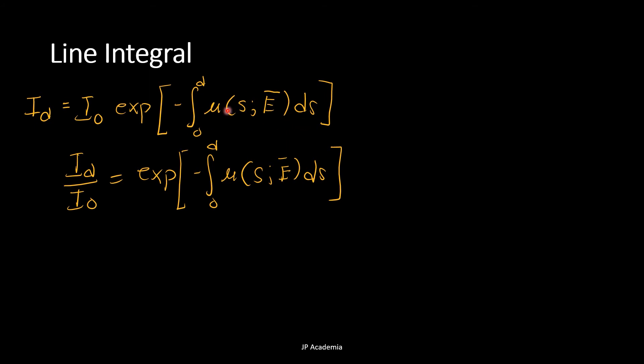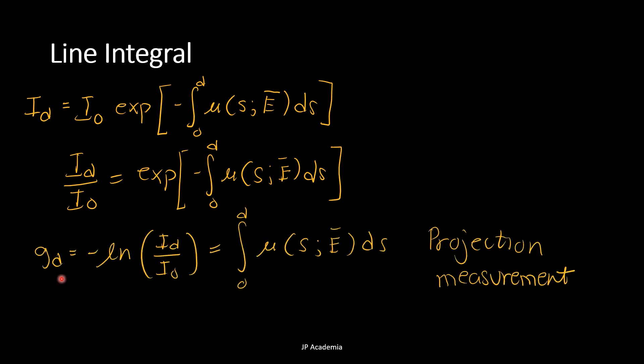Now, here's the thing with CT. If you know the measurement of I sub D from the detector, and you know the initial intensity I sub naught, we will have this projection measurement G sub D, shown. And this is equal to negative natural logarithm of I sub D over I naught, and this is equal to this line integral.